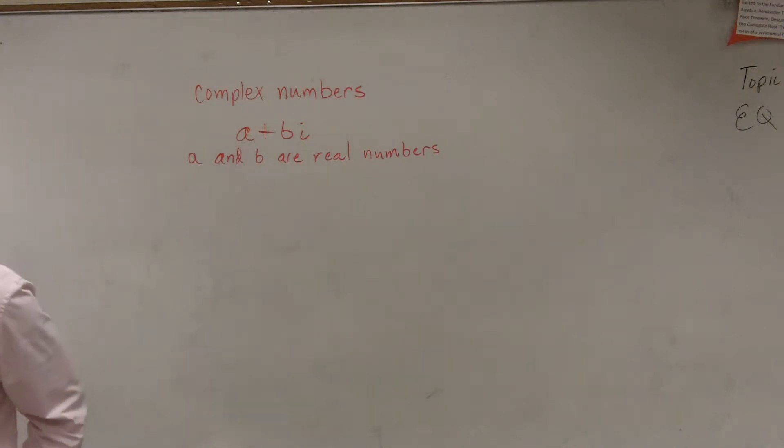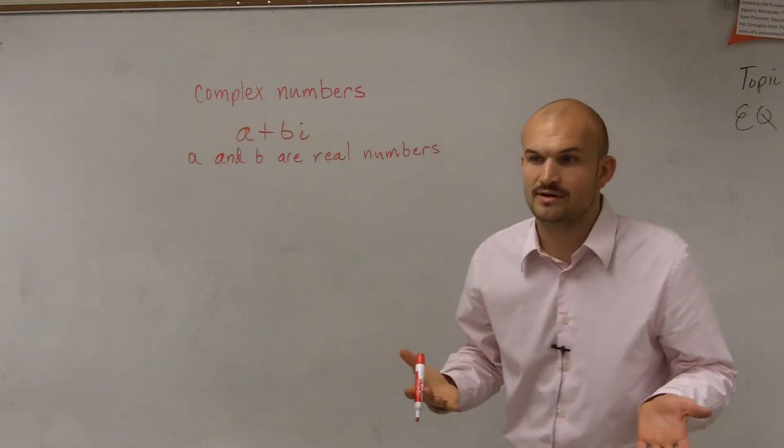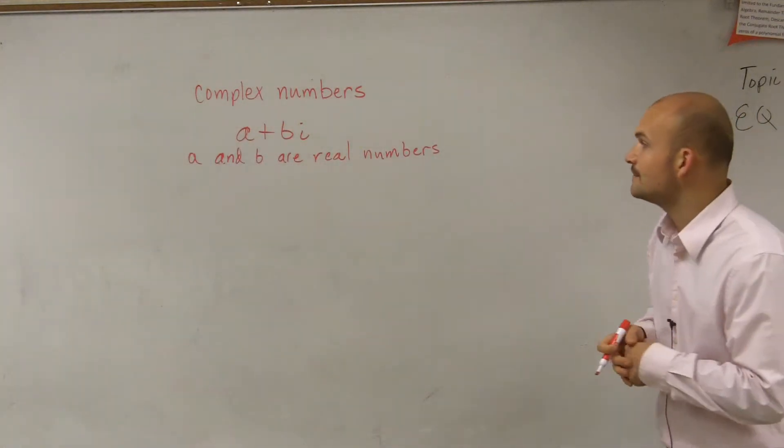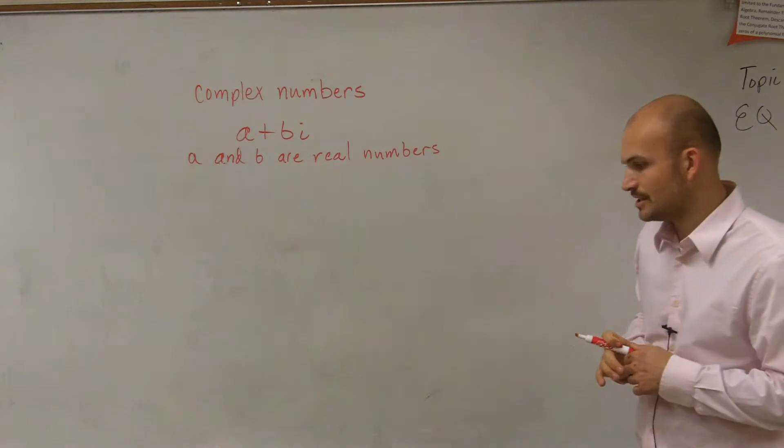So a and b are going to be your real numbers. Then i, remember, we represent as our imaginary number. When we tried to take the square root of negative one, we represented that with i. So i is going to be our imaginary number.